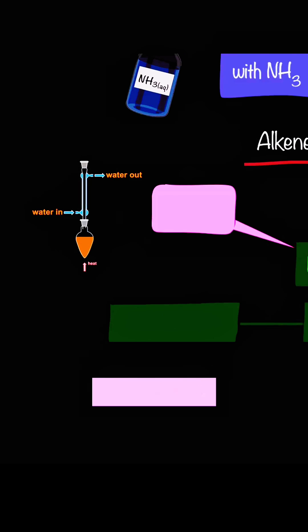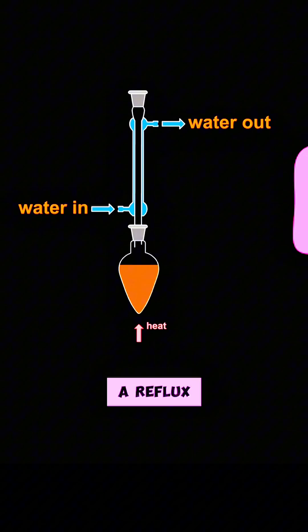Secondary alcohols can be oxidized into ketones, which are prepared by heating in a reflux condenser.